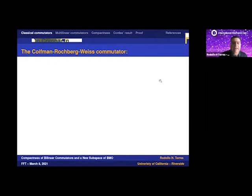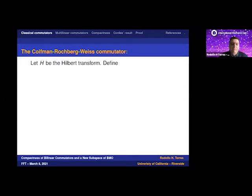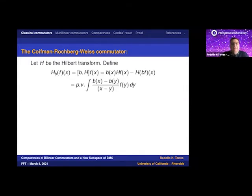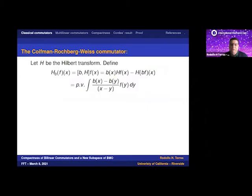Going back in time, the first result along the line of things we will talk about is the Coifman-Rochberg-Weiss commutator. They first studied for the Hilbert transform this simple commuting operation: you multiply a function by a symbol b, then multiply H by the same function and subtract the two. As a singular integral, the kernel one over x minus y becomes b(x) minus b(y), giving additional cancellation.